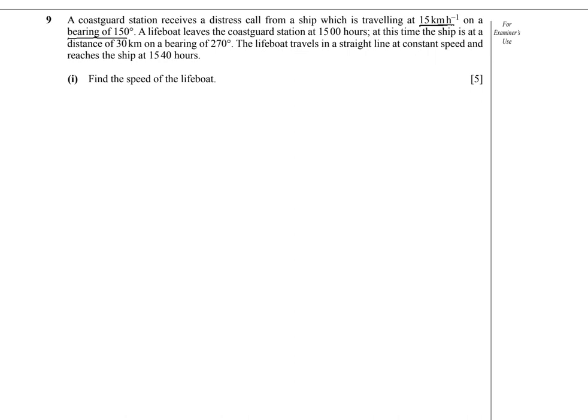A lifeboat leaves the Coast Guard station at 1500 hours, and at this time the ship is at a distance of 30 km on a bearing of 270 degrees. The lifeboat leaves in a straight line at a constant speed and reaches the ship at 1540 hours.